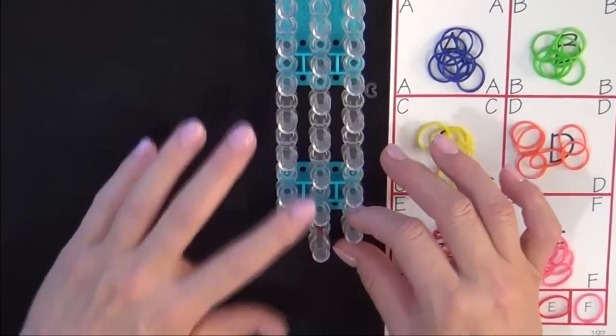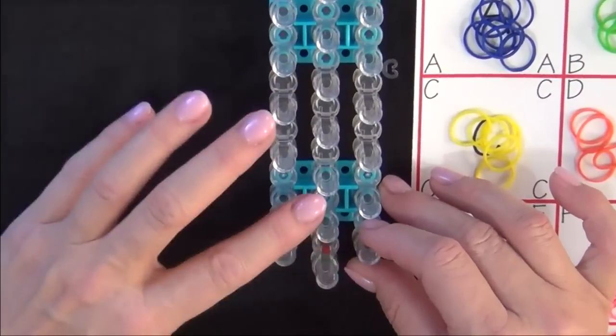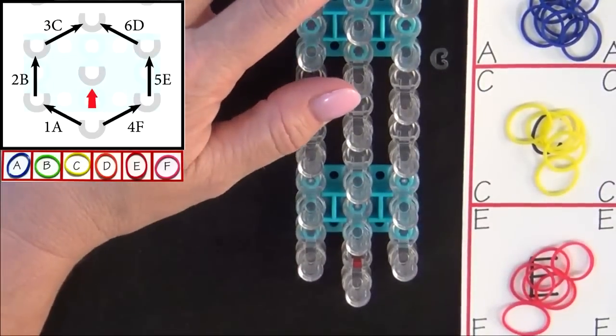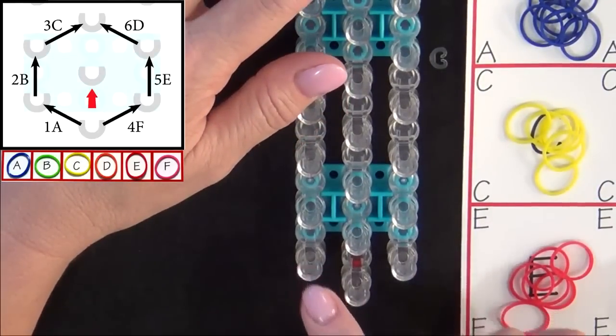Turn your loom so that the red arrow is pointing away from you. Refer to the diagram on your screen to place the first 6 bands on your loom. You'll be forming a hexagon.